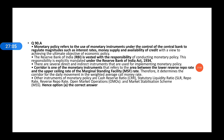The LAF Corridor is one of the monetary instruments that refers to the area between the lower reverse repo rate and the upper ceiling rate of the marginal standing facility. It is used for daily movement in the weighted average call money rate. Other instruments of monetary policy include cash reserve ratio (CRR), statutory liquidity ratio (SLR), repo rate, reverse repo rate, open market operations, and the market stabilization scheme.